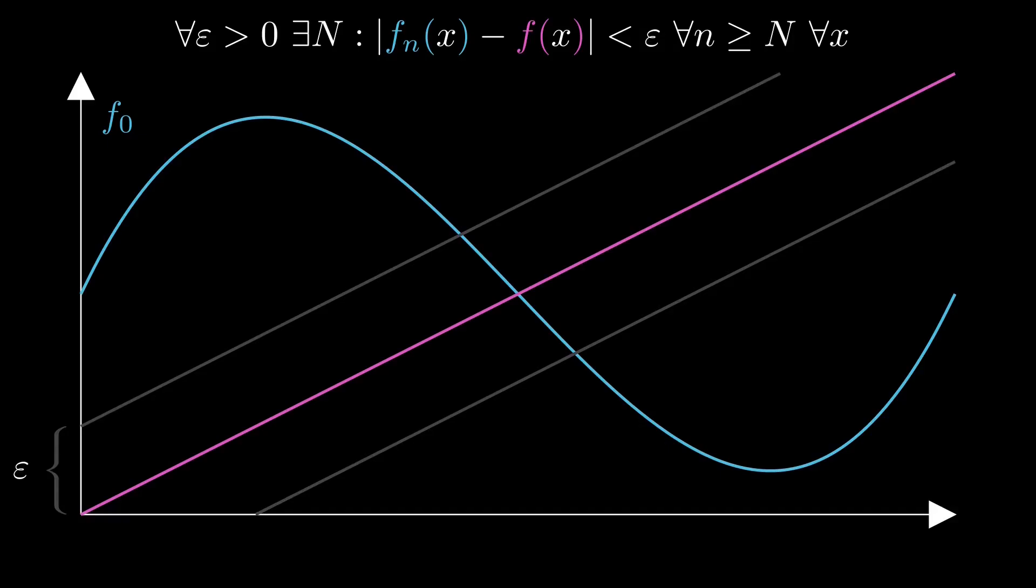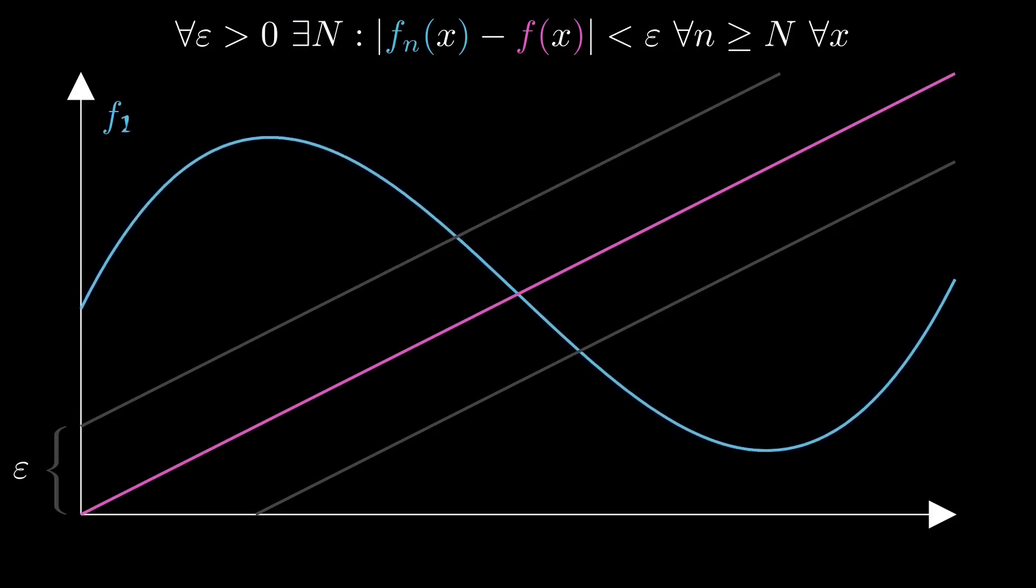Obviously, this isn't true right now, as the blue graph is clearly not contained in the epsilon tube. What now needs to exist is some index big N, so that from that index on the statement is indeed true.